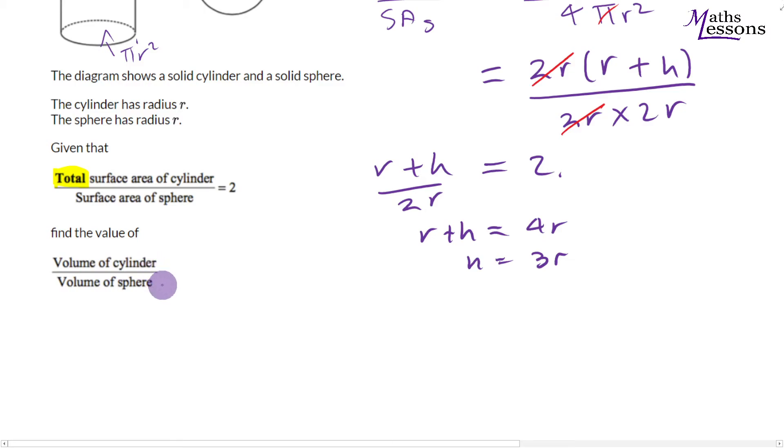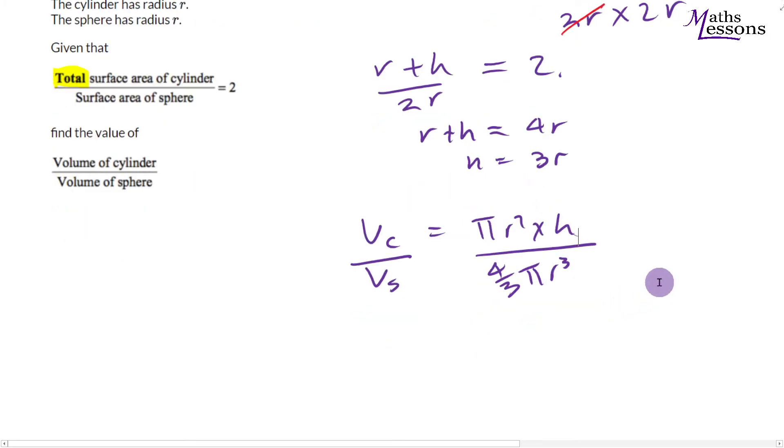Let's do volume of cylinder. The volume of cylinder is equal to the base area pi r squared times by the height, and the volume of the sphere is equal to 4 thirds pi r cubed. The trick to doing this question is spotting that if you replace the h with 3r, you get an r cubed on the top and the r cubed at the bottom and they're going to cancel. And that's where the problem solving and the insight comes in.